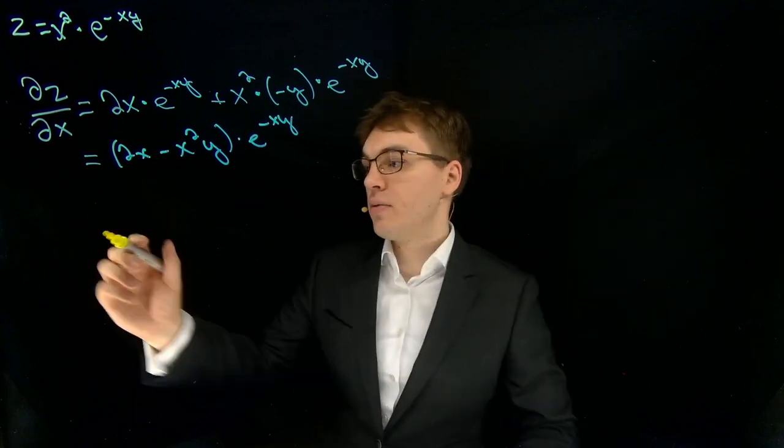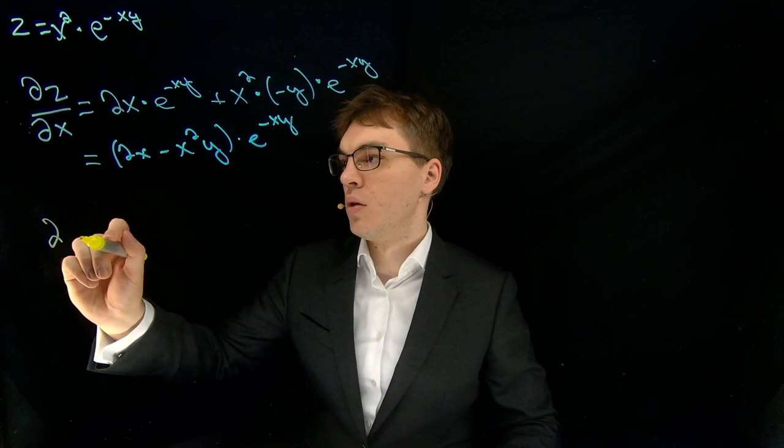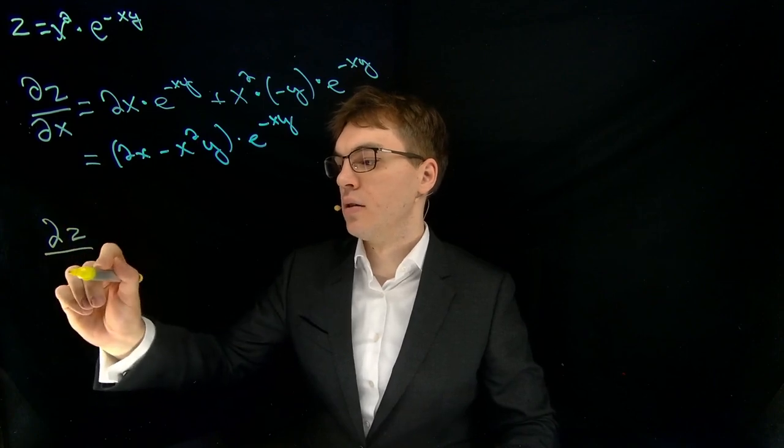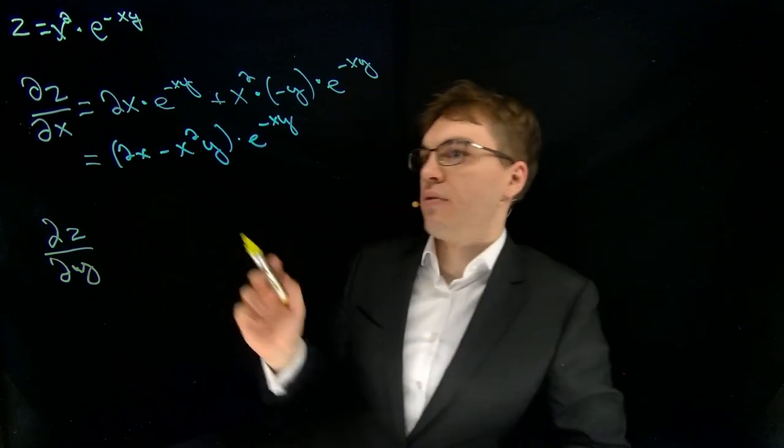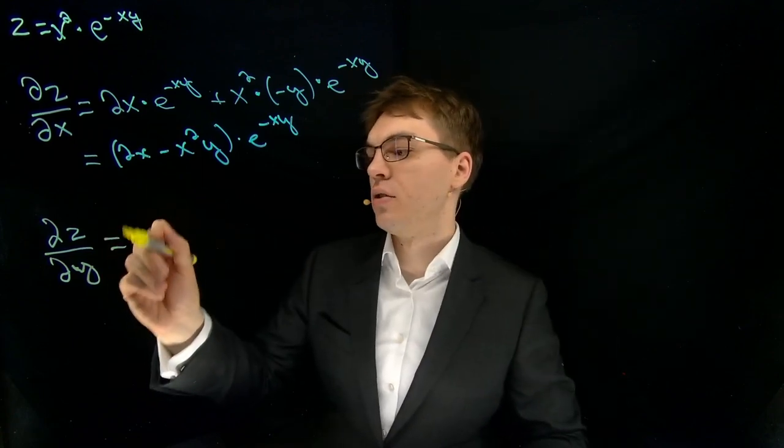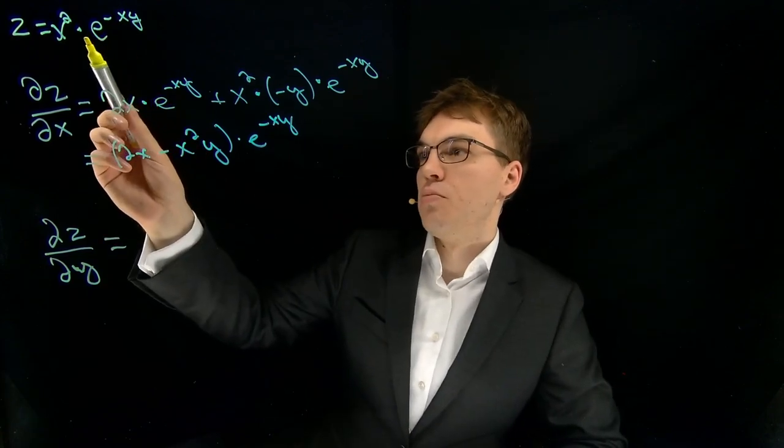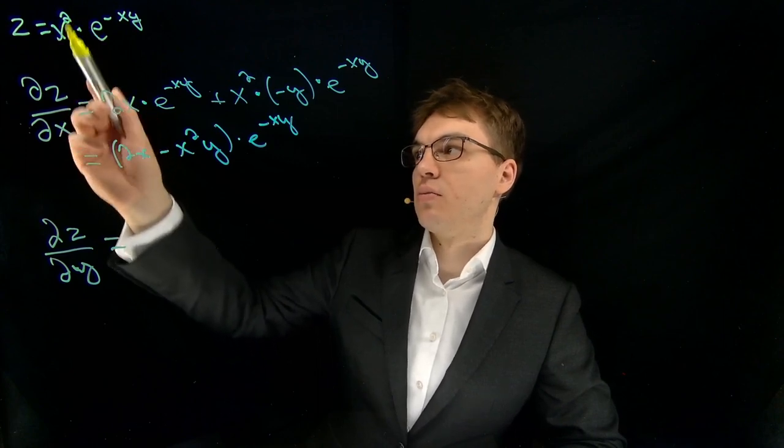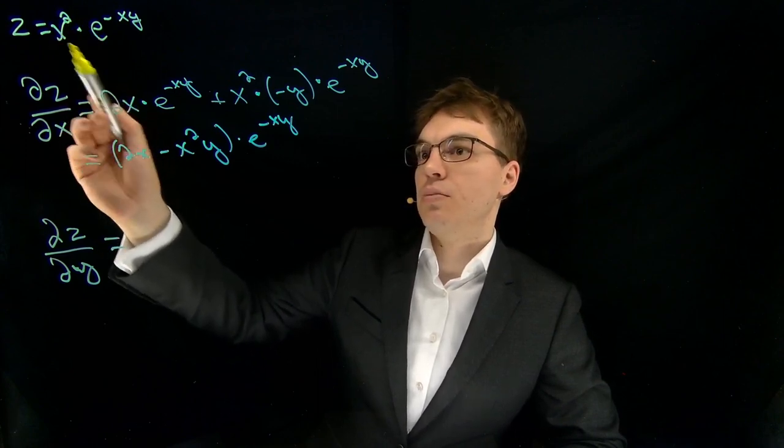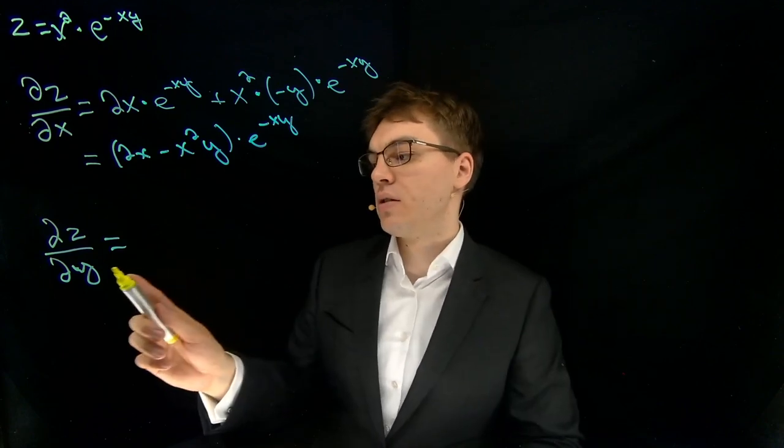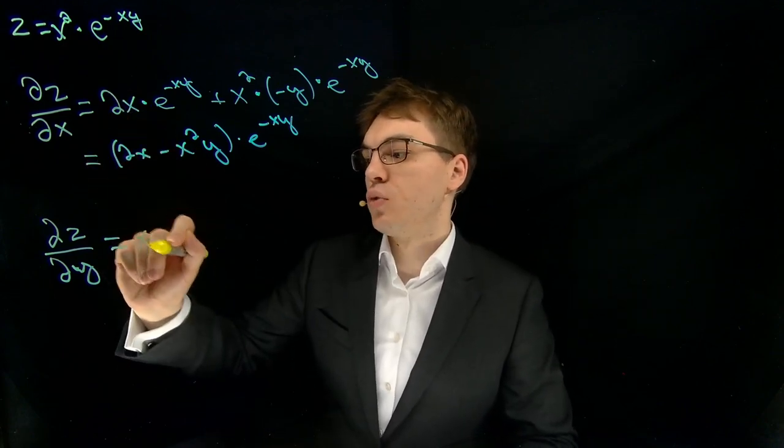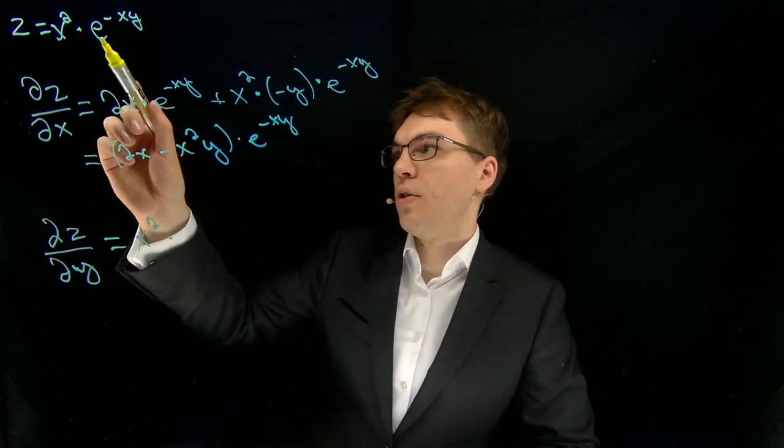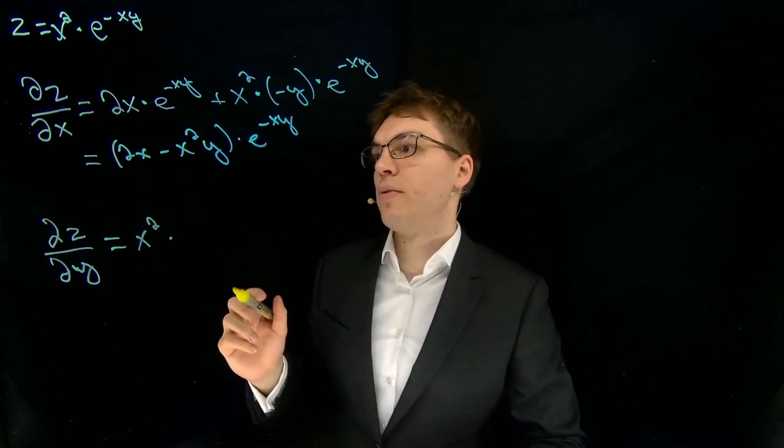Okay, next partial derivative. Partial derivative of that with respect to y. And what we have here, we actually have no longer a product rule, but rather the rule of a constant multiplication. Because this x squared with respect to y is constant. So we just pull this out and multiply with the derivative of this term over here.